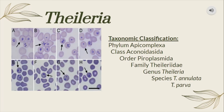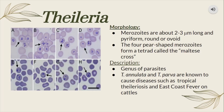The genus Theileria is found under the family Theileriidae. The merozoites of this genus are pyriform, round, or ovoid in shape, forming a tetrad called the Maltese cross. Species of this genus, such as T. annulata and T. parva, are known to cause diseases known as tropical theileriosis and East Coast Fever in cattle.